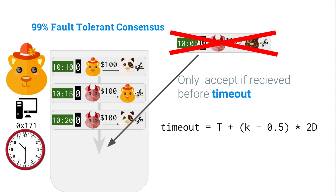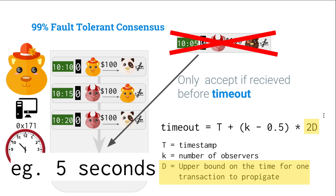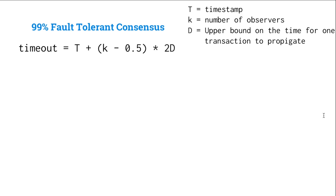How do we calculate this timeout? The timeout is given by the formula T + 2*K*D. T is the timestamp of the transaction — in this case, 10:05. D is the upper bound on the time it takes for one message to propagate — this is our synchrony assumption, currently set at five seconds. And K is the number of observers.